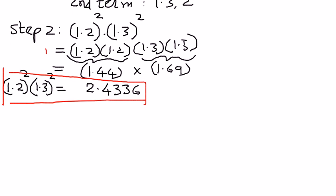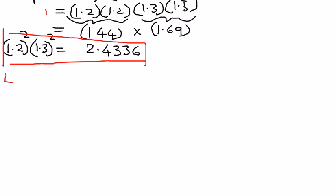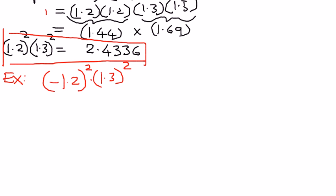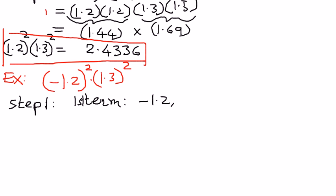Let's look at another example — this time with a base term with a negative sign: negative 1.2 raised to the power of 2 times 1.3 raised to the power of 2. We will again identify the base terms in step 1. For the first term, the base term is negative 1.2 and the exponential term is 2. For the second term, the base term is 1.3 and the exponential term is 2.